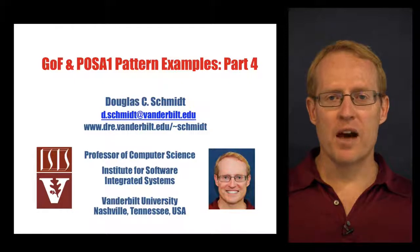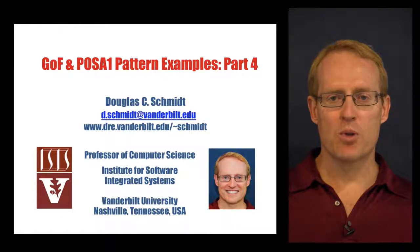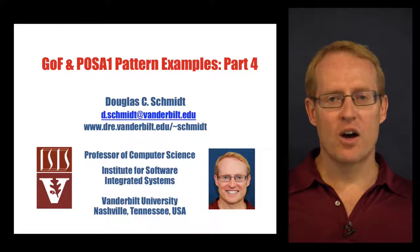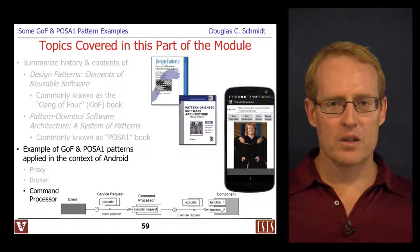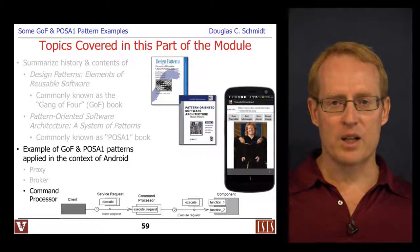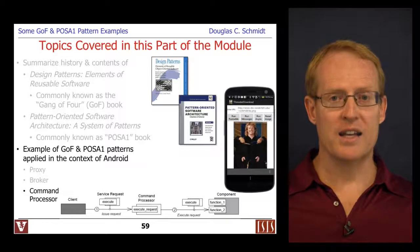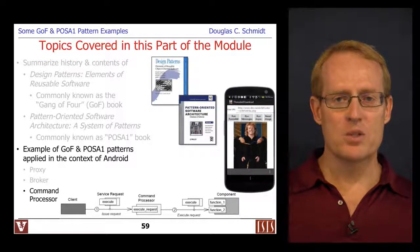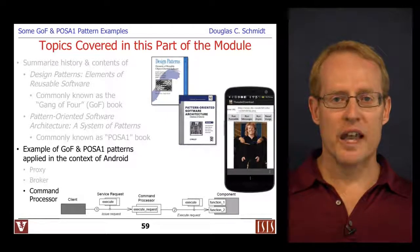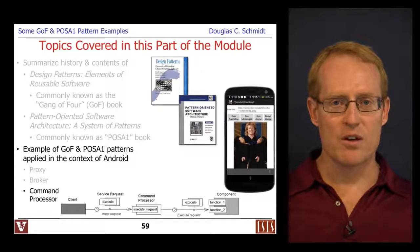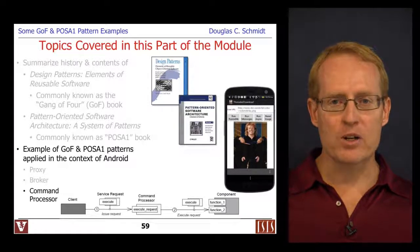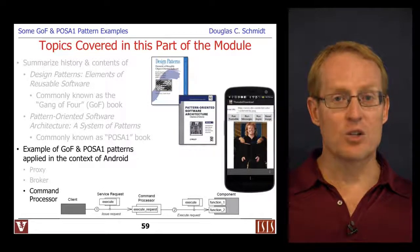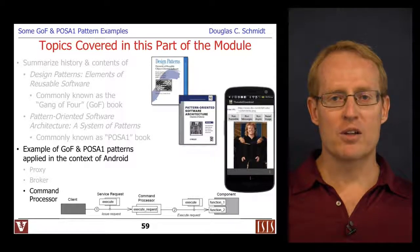Welcome to part four of the module on Gang of Four and POSA1 pattern examples, with an emphasis on how they provide support for concurrent and network software. The previous two parts described the proxy pattern, which provides a surrogate allowing a client to access an object in a remote process, and the broker pattern, which uses proxy along with other patterns to isolate clients and servers from underlying communication mechanisms. We now discuss what's known as a pattern complement called the command processor.